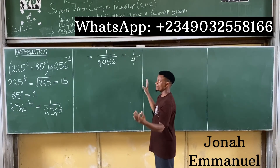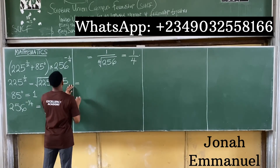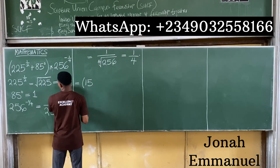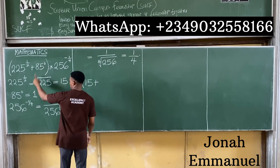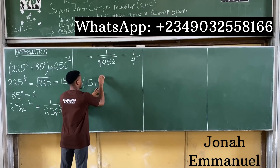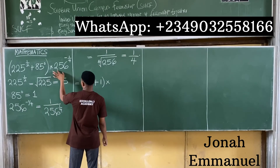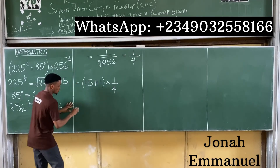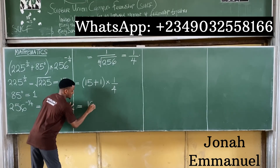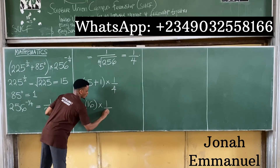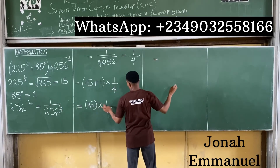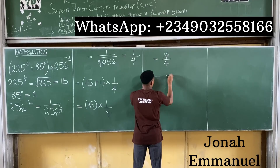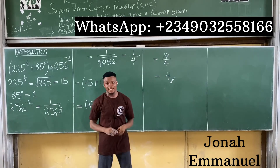Now bringing the individual results together: 225 to power one half gave 15; 85 to power zero gave 1; and 256 to power negative one quarter gave 1 over 4. So the expression becomes (15 plus 1) times one quarter, which is 16 times one quarter, giving 16 over 4, which equals 4. The answer is 4.